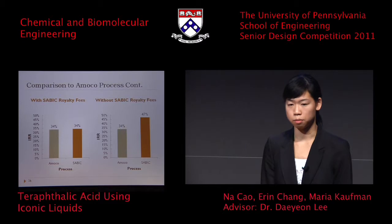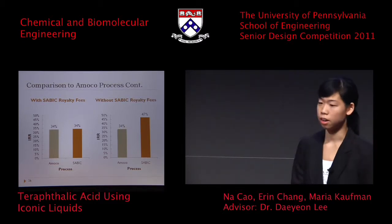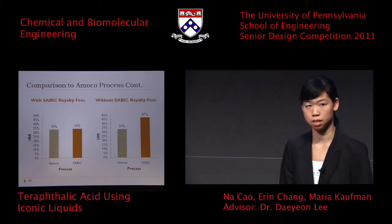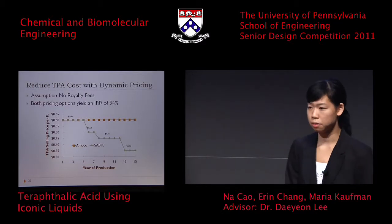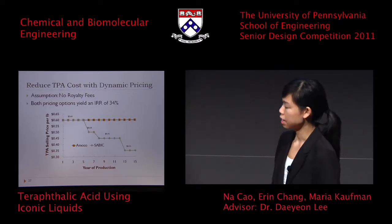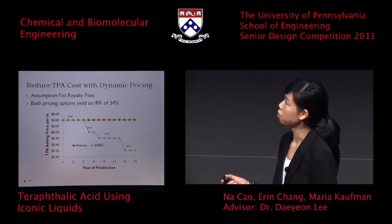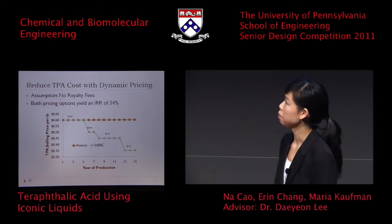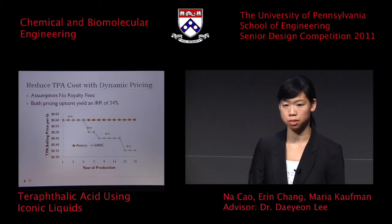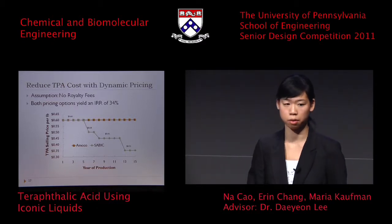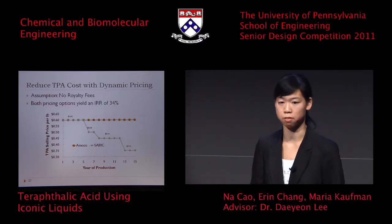However, the royalty fee with SABIC is most likely negotiable. For demonstration purposes, if SABIC did not charge a royalty fee, we would see an IRR of 47%, much higher than 34%, and we would be able to reduce the price of TPA. Using a dynamic pricing scheme — where both processes yield an IRR of 34% — the Amoco process sells at $0.60 per pound over the plant's production life, whereas with our SABIC process we would be able to reduce the selling price of TPA, and by the 13th year sell TPA for a little more than half the current price. This is our hope: that lower TPA prices would make PET bottles for SODIS more affordable for the developing world.